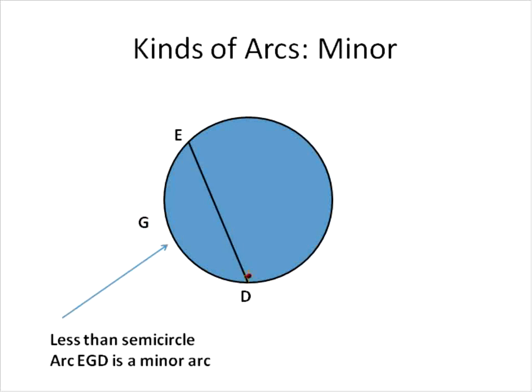There are arcs that are less than the semicircle, smaller like this arc ED. And because we have E here and D here with an arc, it might be E to D or E down to D. So usually there will be a third point so that you can say it's arc EGD. In other words it goes through that point. And so you can know which direction it's going to go. This arc is less than a semicircle or less than half of the circle, so therefore it is a minor arc.